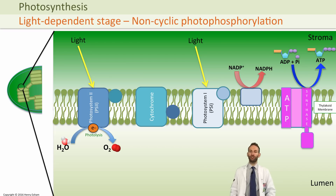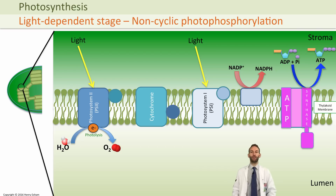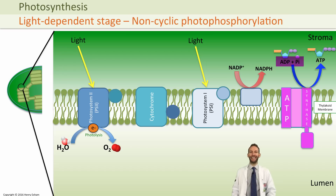In summary, the light-dependent stage produces NADPH and ATP, both of which are needed in the light-independent stage. This entire process is more specifically known as non-cyclic photophosphorylation, and it requires ADP and NADP+ to work.